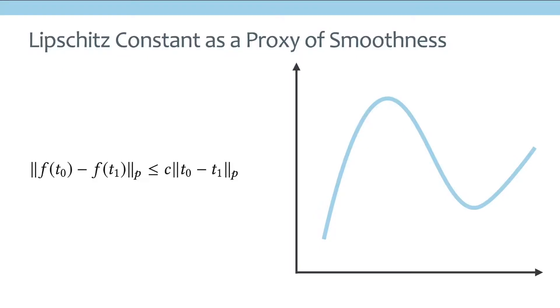This behavior of Dirichlet regularization motivates us to explore different alternatives to guarantee smoothness. And the key idea behind our method is this Lipschitz continuity. By definition, Lipschitz continuity means that the output difference of a function f is going to be bounded by a constant c times the difference in the input. And this constant c used to bound this output difference is called the Lipschitz constant.